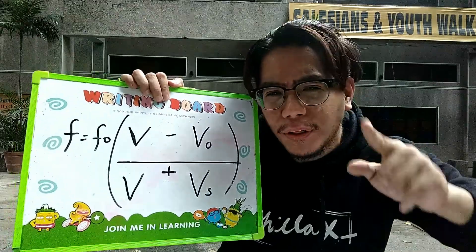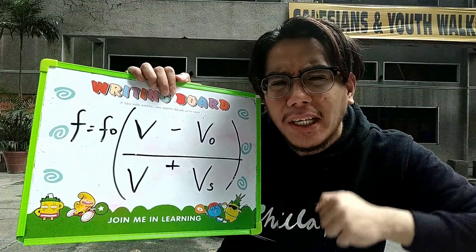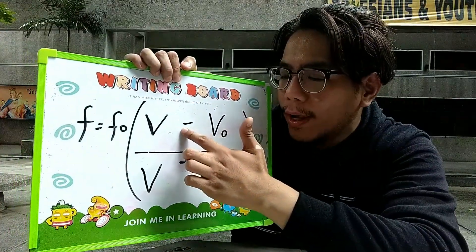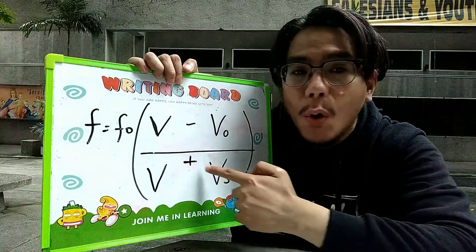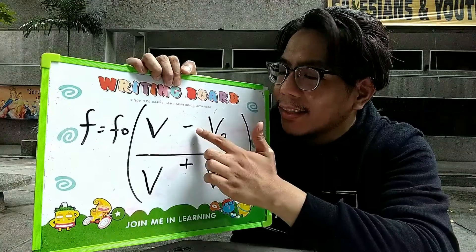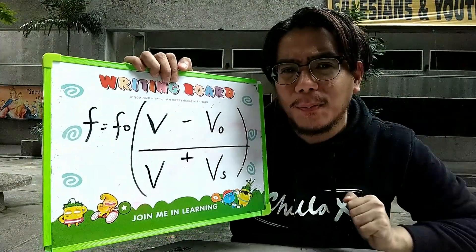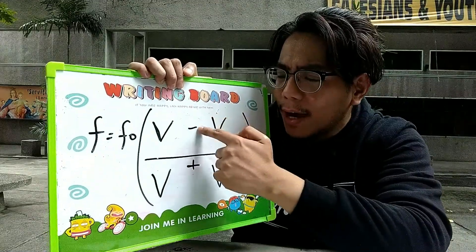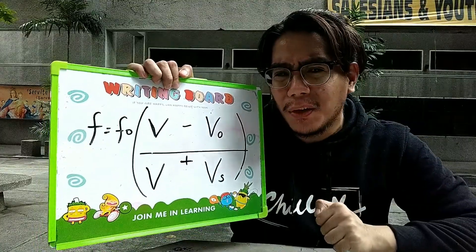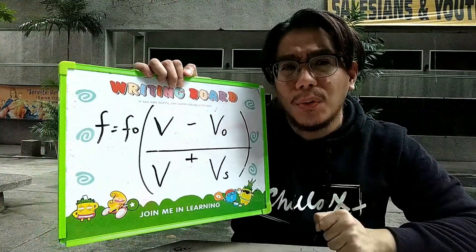Ang poll number three: bibigyan kita ng sampung segundo para alamin kung anong ibig sabihin ng formula na ito. Ang sagot: observer is going away, and the source is going away as well. Tatandaan natin, yung arrangement of sign — may plus, minus, minus, plus. Yung plus dito sa denominator, siya yung nagsasabi na going away yung source.